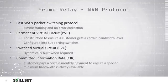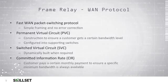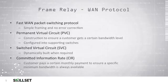Frame Relay is another WAN protocol that can provide simple framing and no error correction. It's a packet switching technology that can be used with permanent virtual circuits or PVCs, which provide a customer with a certain bandwidth level, are permanently established, and can be configured with supporting switches. You can also use switched virtual circuits or SVCs, which are built dynamically when a connection is required. Committed Information Rate or CIR requires the customer to pay a certain monthly bill to ensure they have a certain minimum bandwidth which will always be available to them.